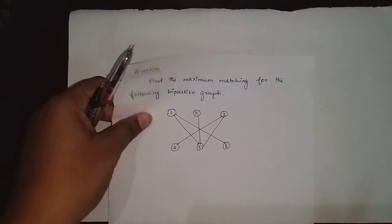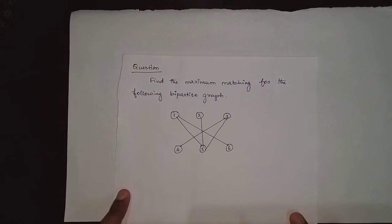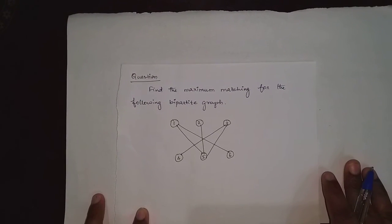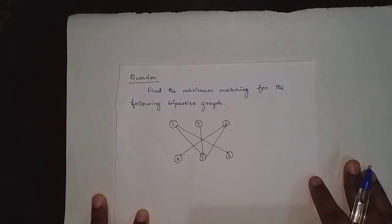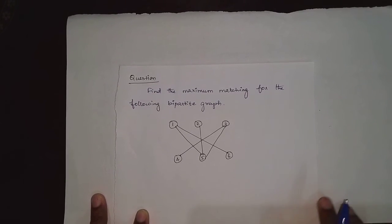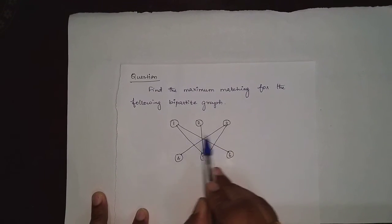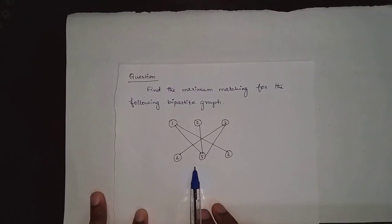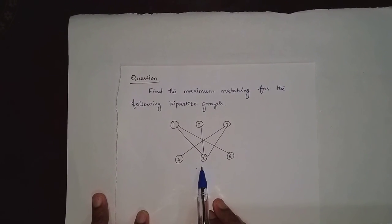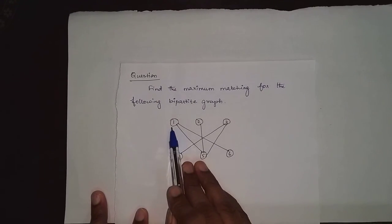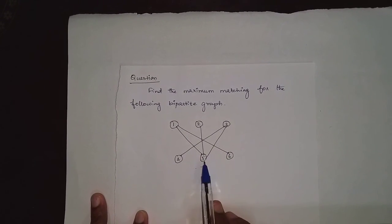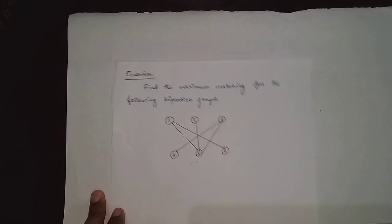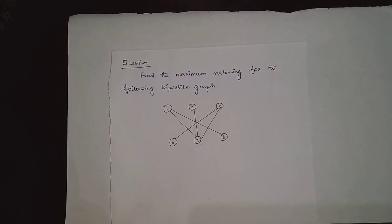Here is a practice question: find the maximum matching for the following bipartite graph. Unlike the example, no initial matching edges are given in this question — just a graph. You can choose either vertex set to start from and solve the problem. If you have any doubts, feel free to contact me and I will help you out. Thank you.